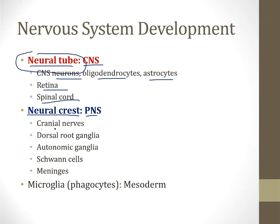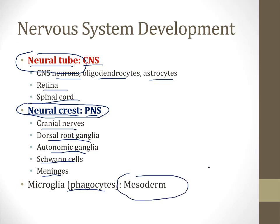Most structures in the peripheral nervous system derive from the neural crest — for example, the cranial nerves, dorsal root ganglia, autonomic ganglia, Schwann cells, and the meninges. The microglia, which are phagocytes in the nervous system, are an unusual exception: they derive from mesoderm, not from the ectoderm. Most of your nervous system comes from the ectoderm via the neural tube and neural crest, but microglia are mesodermal derivatives.